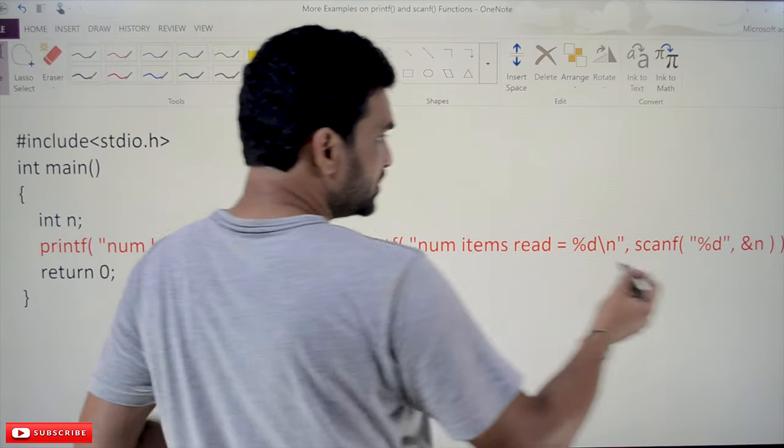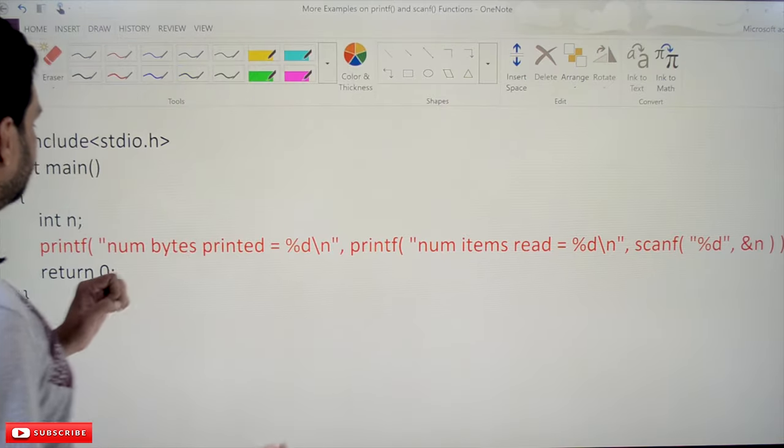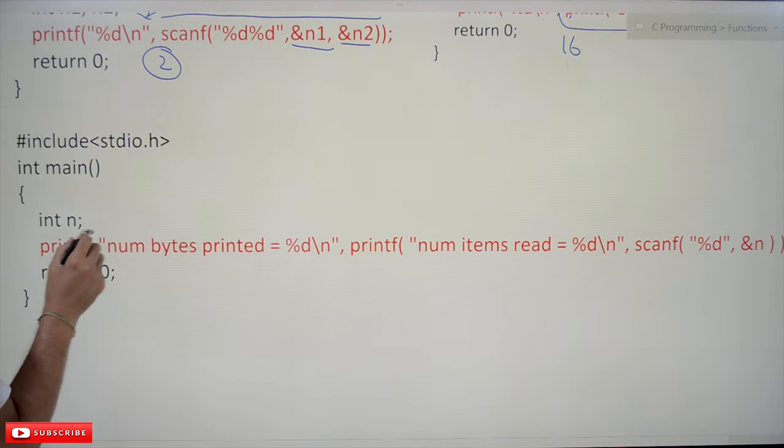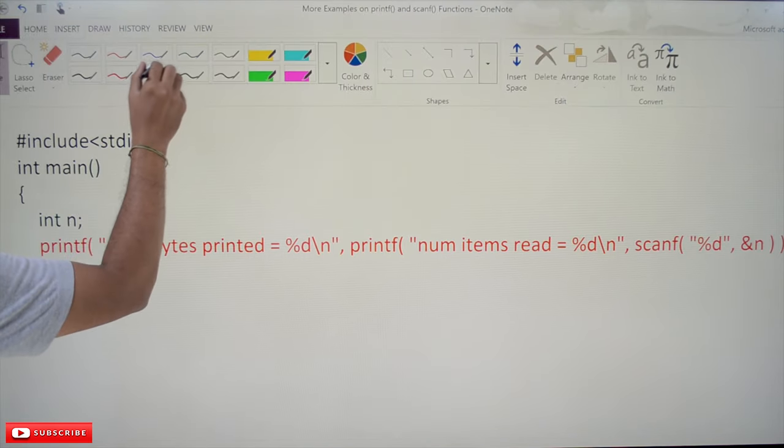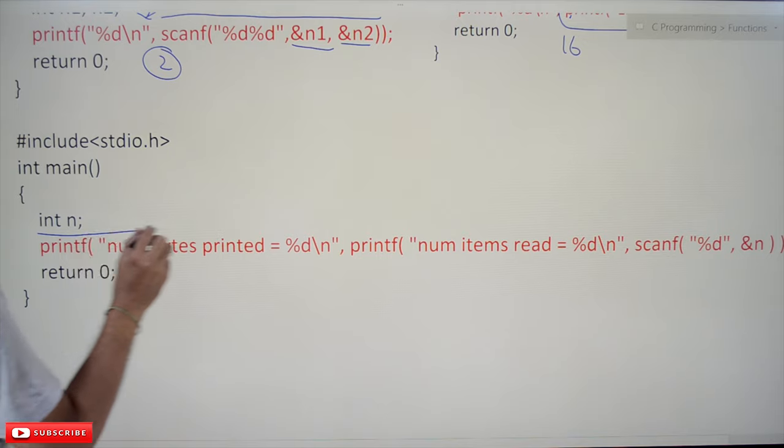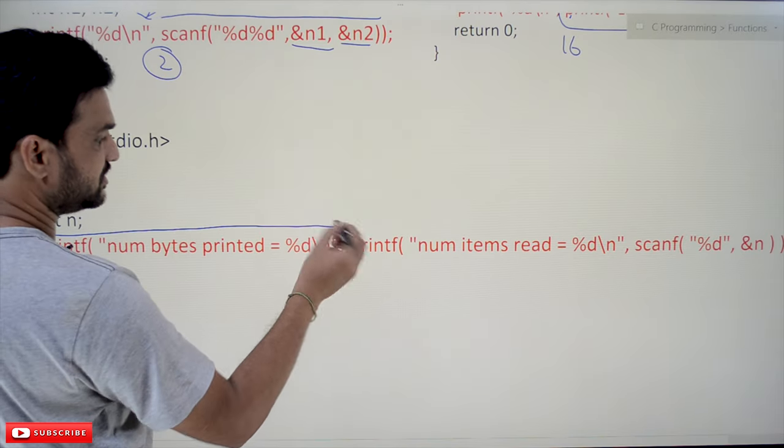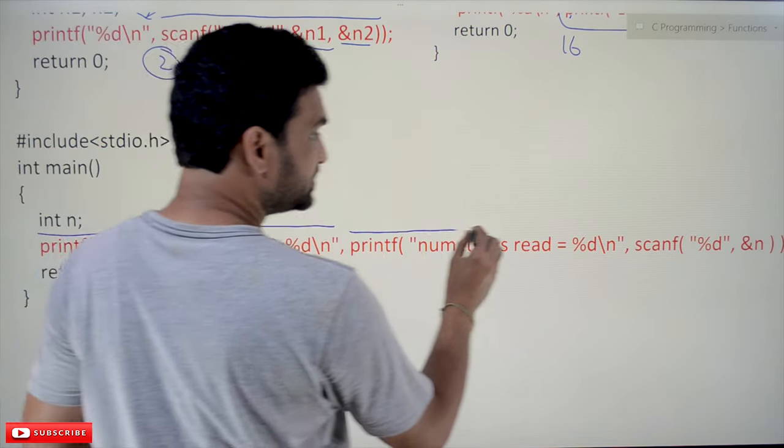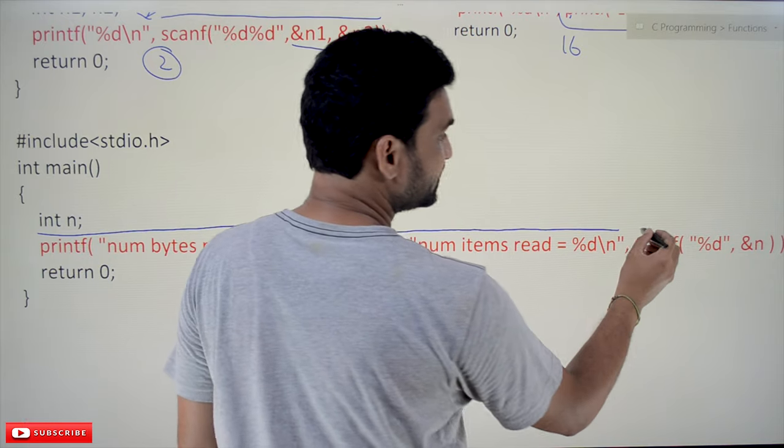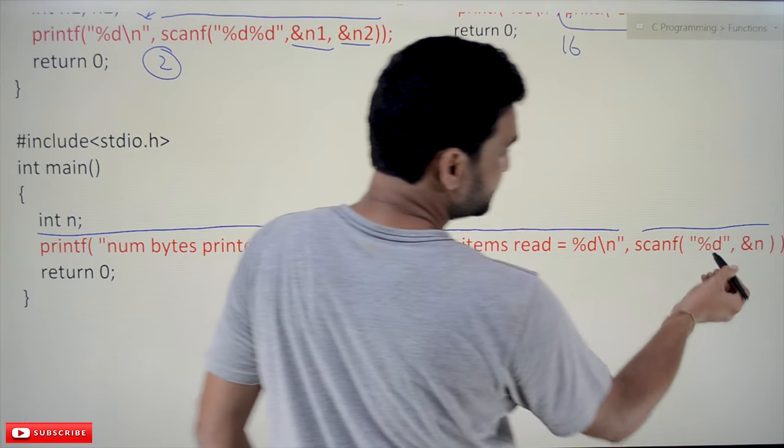So the innermost printf statement - this is the outer one, this is the outermost printf, and within that we are having this printf, and within this printf we are having this scanf.